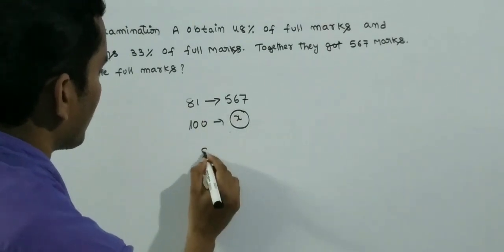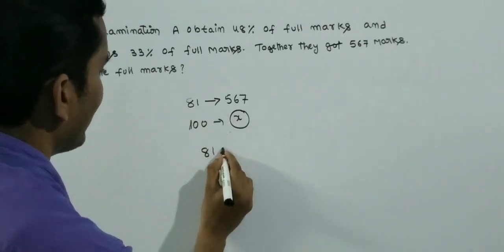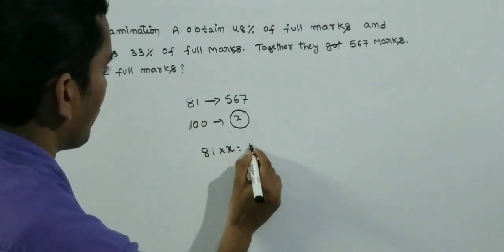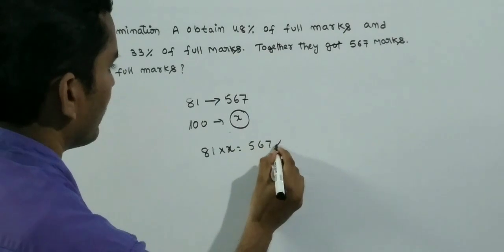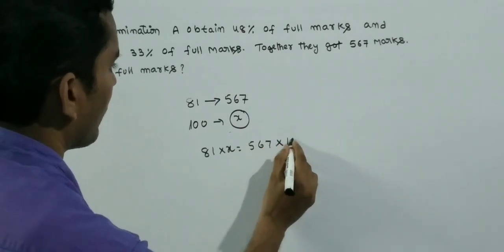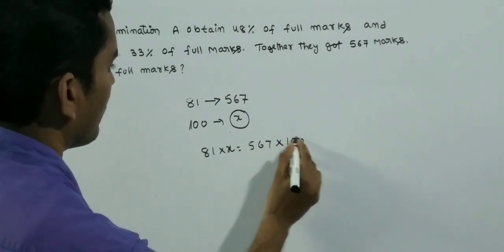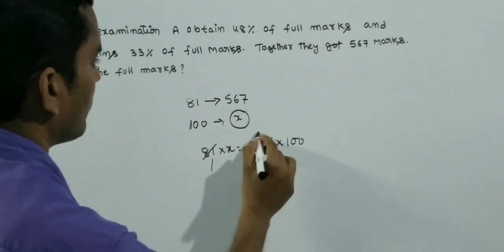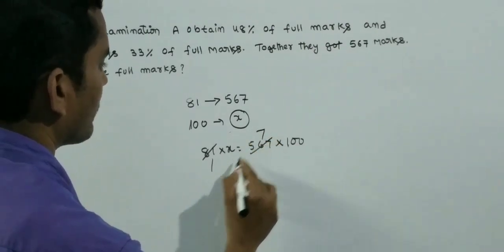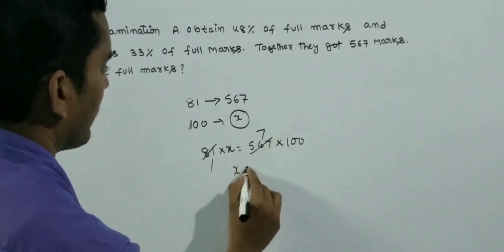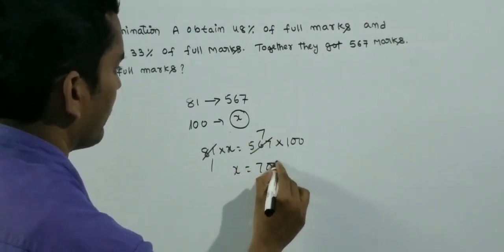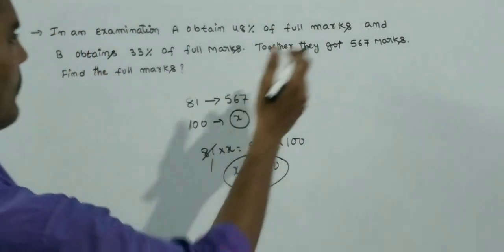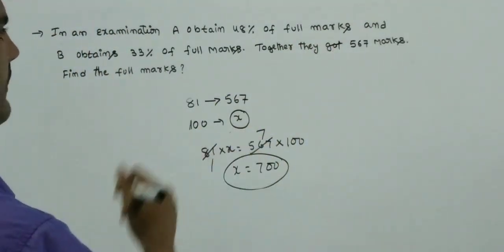Go for cross multiplication. 81 into X equals 567 into 100. Simplifying, X equals 700. Total marks is 700.